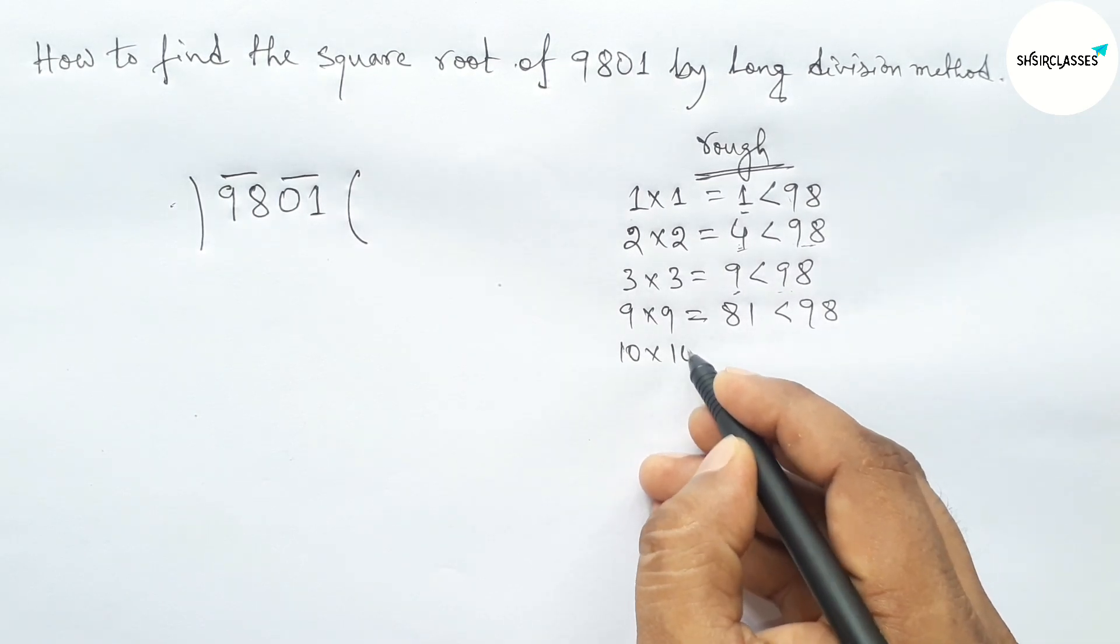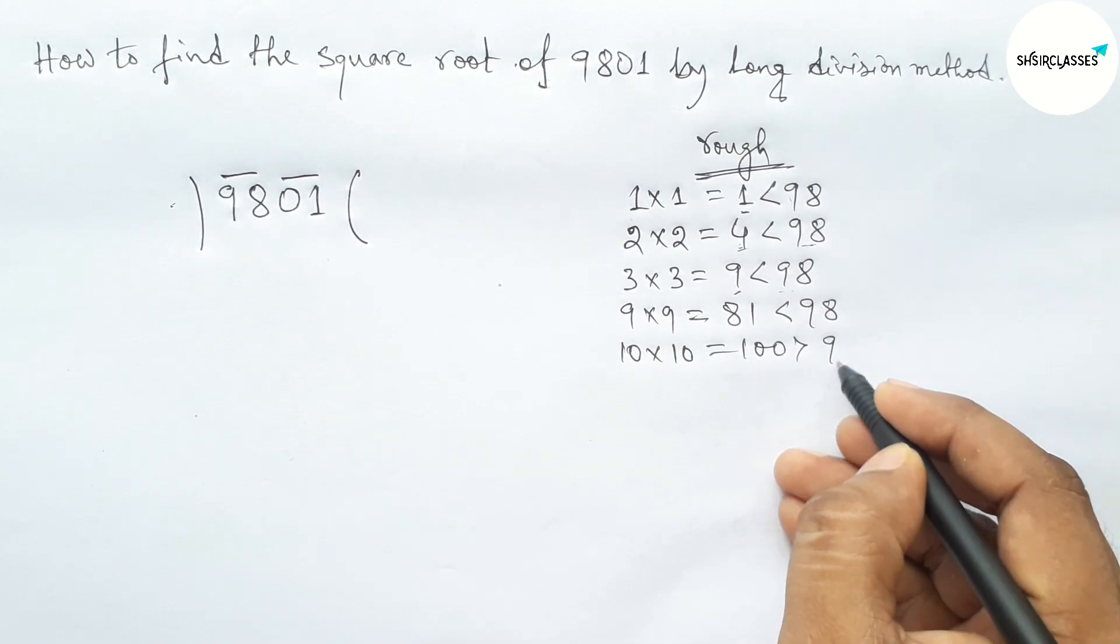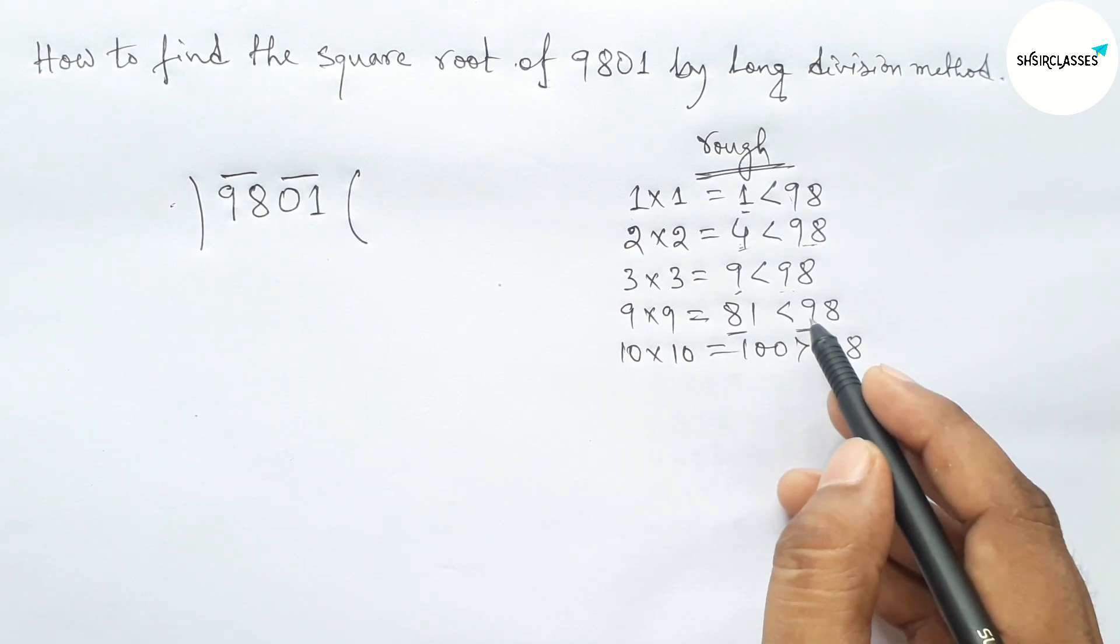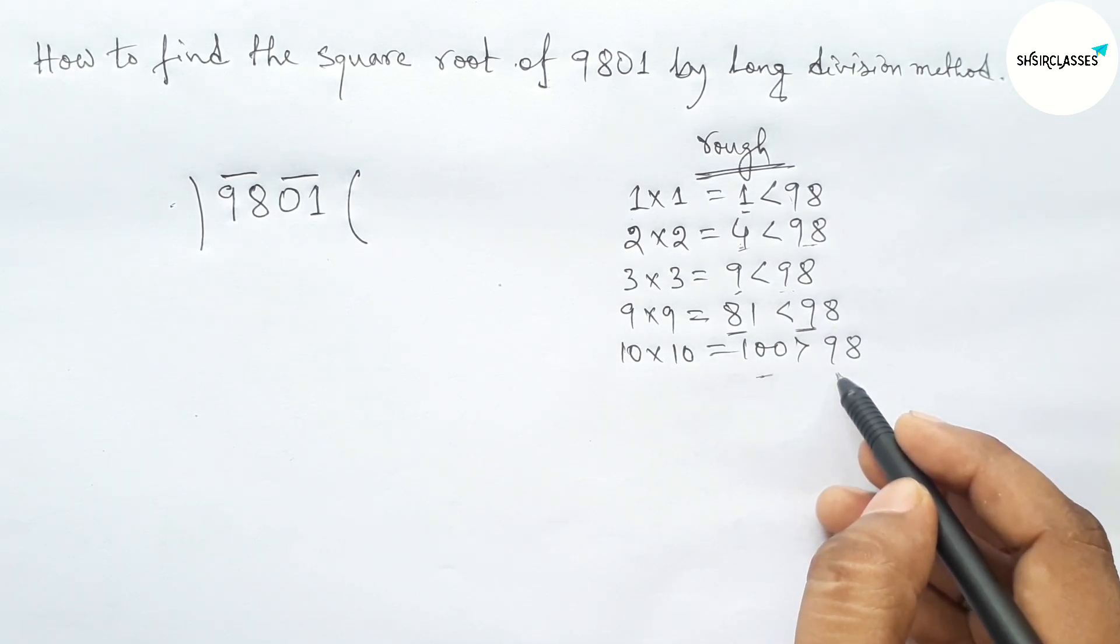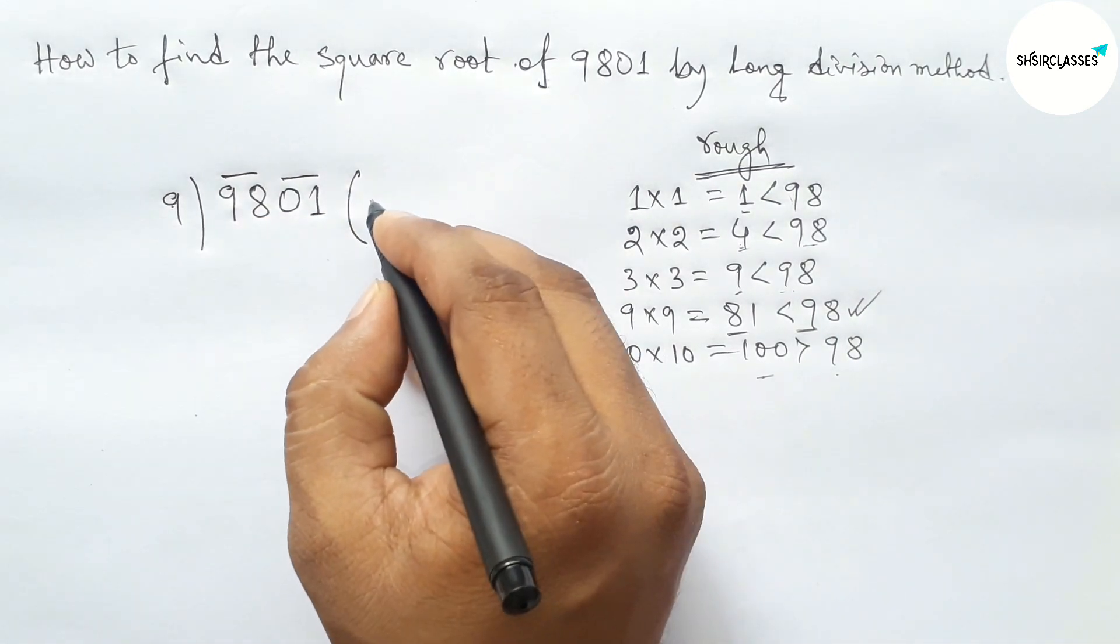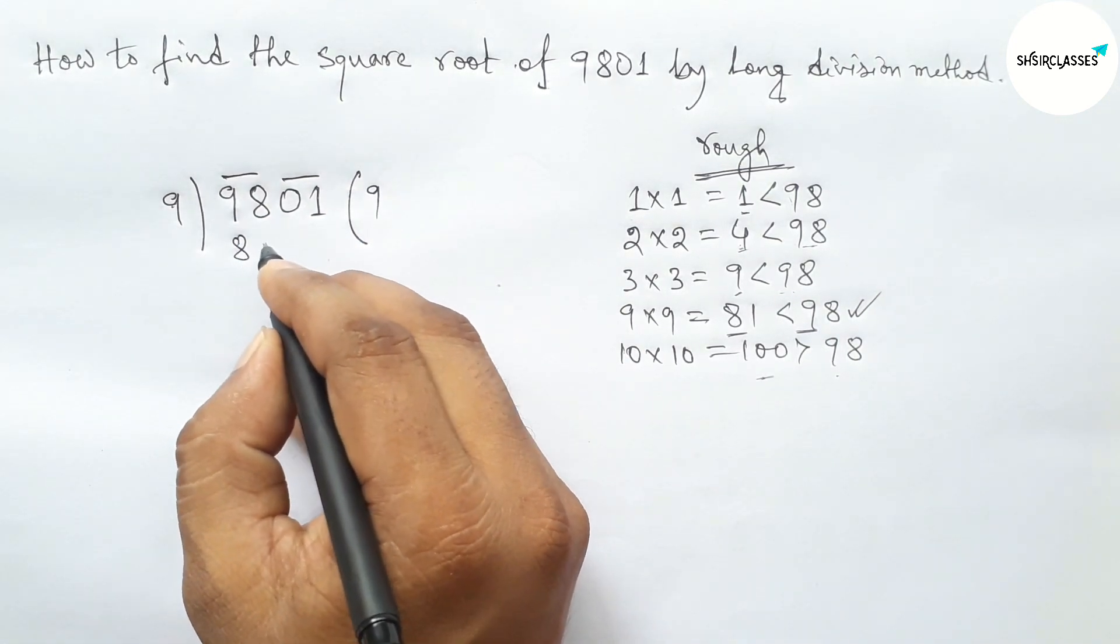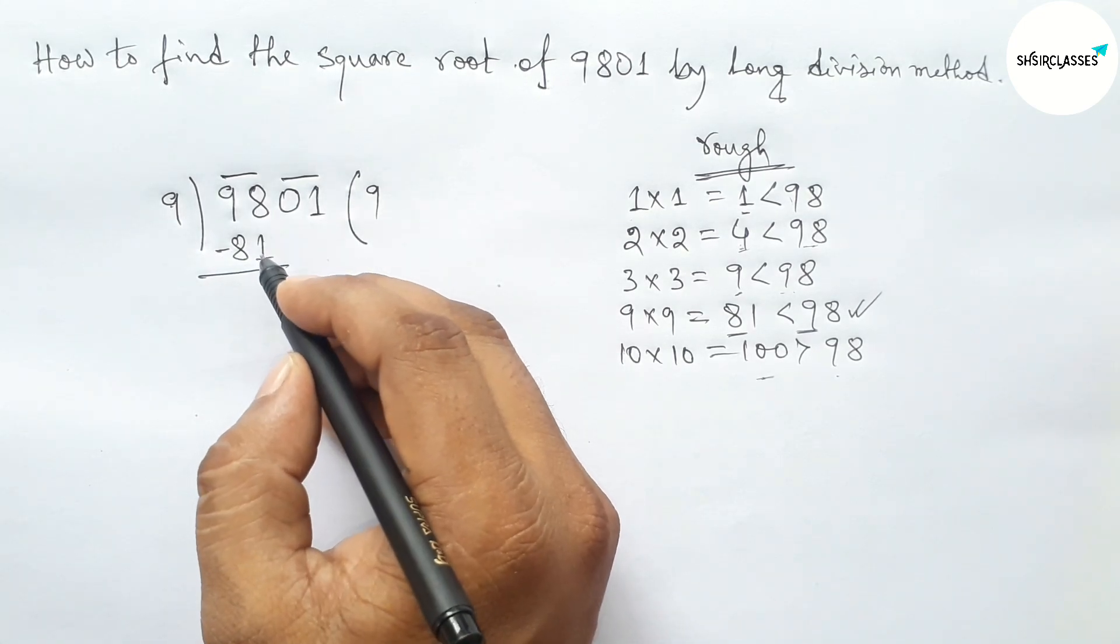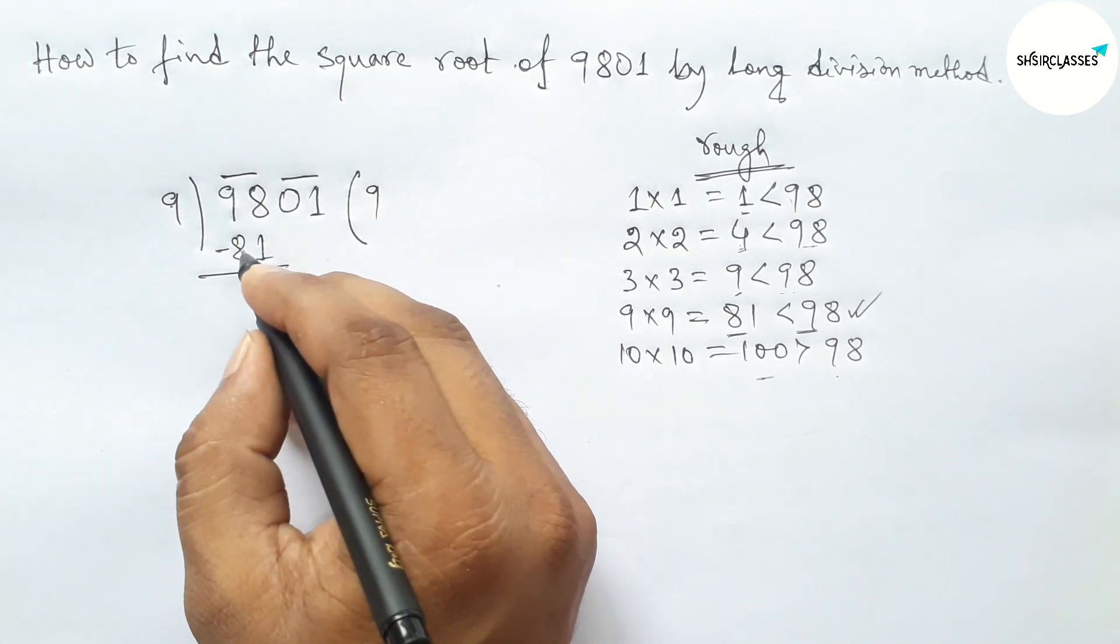So here in these two cases, 81 is more closer and less than 98, and 100 greater than 98. So this is perfect. So we should take 9 here. So 9 times 9 equals 81.